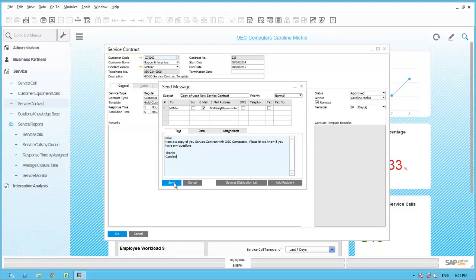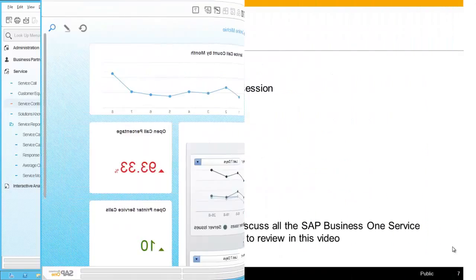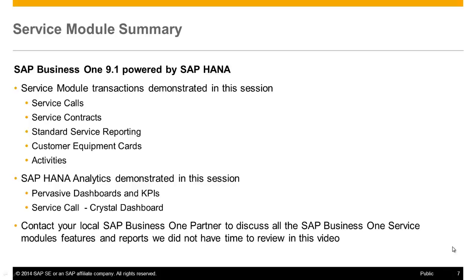Now that she has approved the contract, Caroline would like to send the customer a copy of the newly created service contract for their records. She hits the email button in the SAP Business One toolbar to start the email dialog. From the send messages window, she clicks add recipient, selects the contact person tab, and selects Mike Miller from Bayou Enterprises, who is the CEO. She composes the email with a subject and message text. Things look good, so she clicks send.